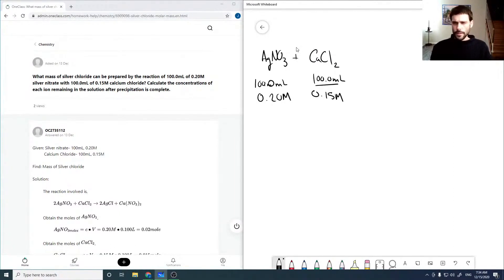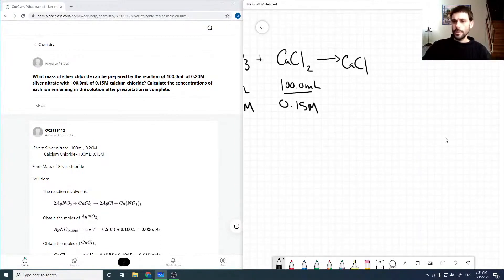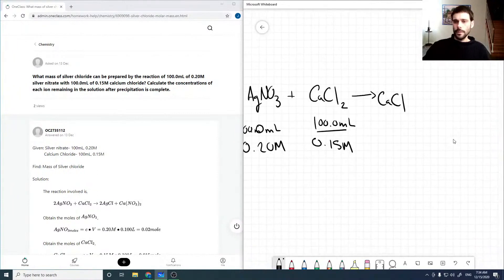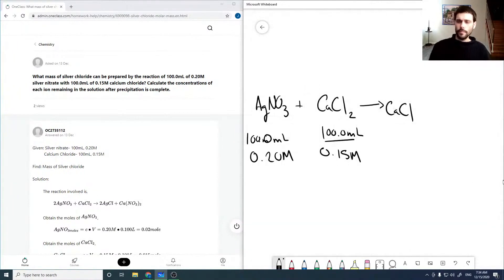And these are reacting to form silver chloride as a solid and calcium nitrate. Now we're going to need two of these to balance the chlorines, two of these to balance the silvers. That looks good. That looks balanced now.